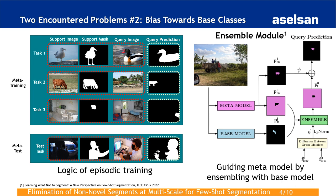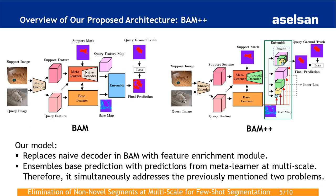The second problem is bias towards base classes. Few-Shot Segmentation models confuse pixels belonging to base classes as novel, since models are constantly exposed to base classes during meta-training. To prevent this, the BAME paper suggested that separate models should be trained on the meta-training set in a supervised manner, called the base model. Predictions from the meta-module are then assembled with predictions from the base model.